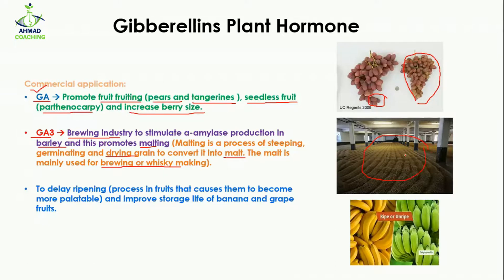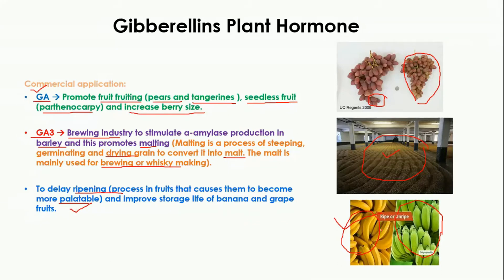Gibberellin also helps in delaying the ripening of fruits. Ripening is a process in which fruits become more palatable — meaning more sweet and enjoyable in taste. Gibberellin also improves the storage life of bananas and grapes. Here you can see unripe bananas versus ripe bananas — you would prefer the ripe one because it is palatable, sweet in taste, and soft in texture compared to the unripe banana.